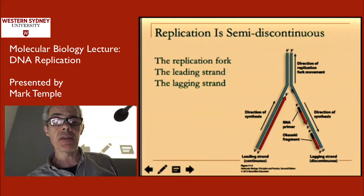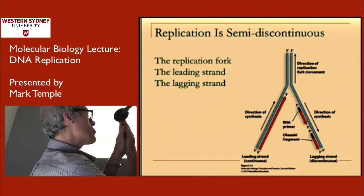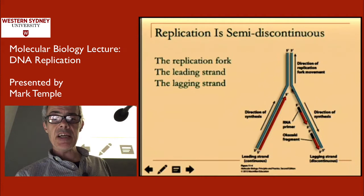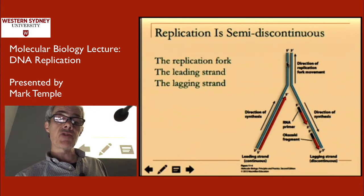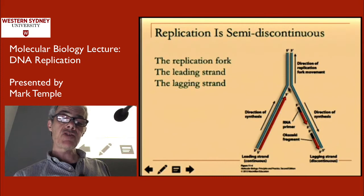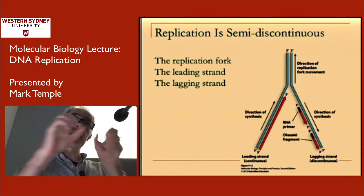The parental strand is being unzipped and separated — the strands are being pulled apart in one direction. One strand is being synthesized in the direction that the replication fork is moving, which is easy for the cell. But the other strand of DNA is being synthesized in the opposite direction, and I'll show you how the cell copes with that and is able to synthesize both strands simultaneously as the replication fork moves in one direction.